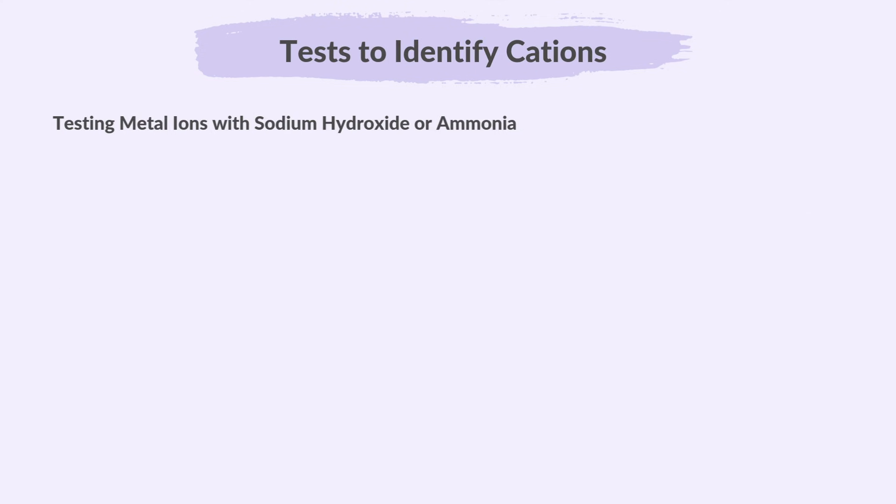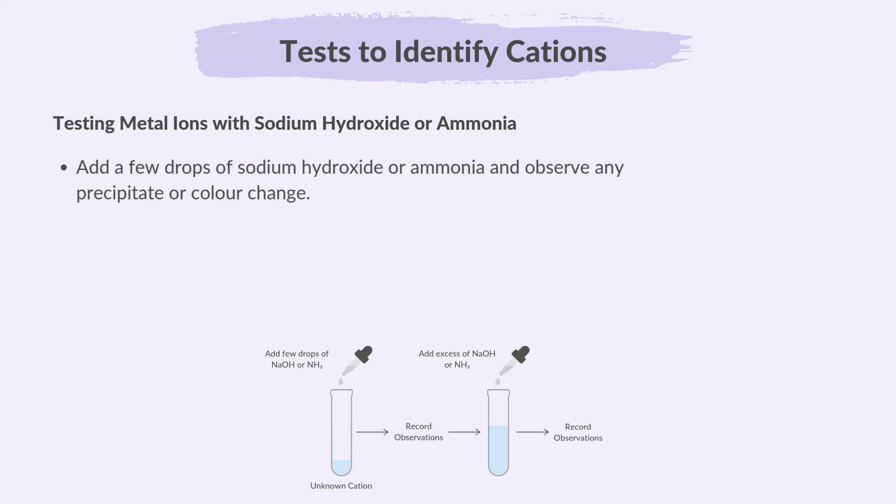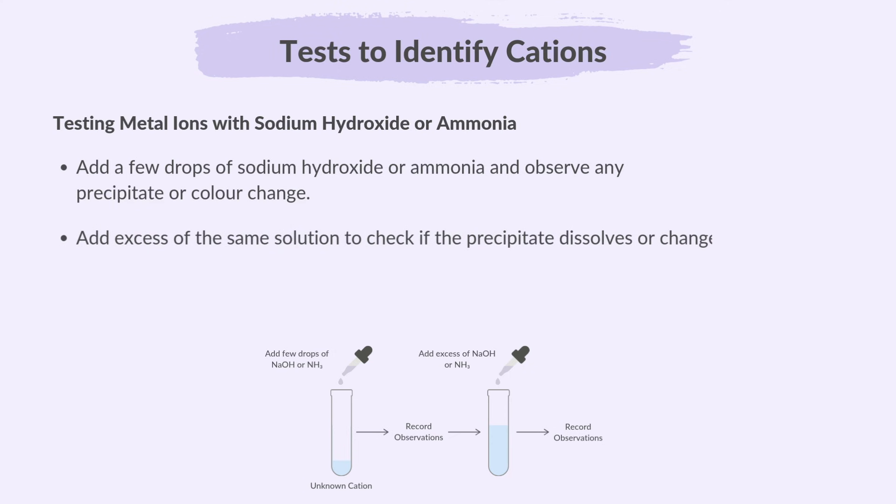When testing metal ions with sodium hydroxide or ammonia, add a few drops and observe any precipitate or colour change. Then add excess of the same solution to check if the precipitate dissolves or changes.